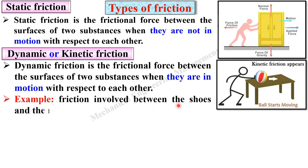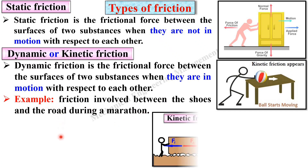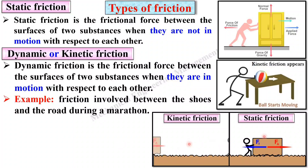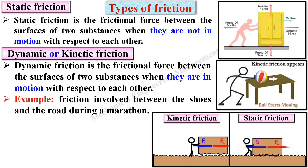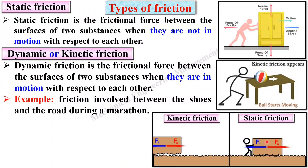For example, friction involved between the shoes and the road during a marathon — at that time there is motion of the shoes with respect to the surface of the road, so there is relative motion, which is why it is called kinetic friction. From these two figures you can understand the difference: in static friction the body has no relative motion; in kinetic friction there is relative motion between the two surfaces.